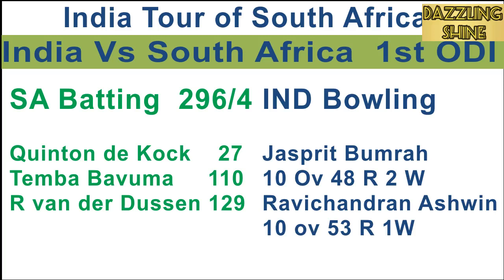Last ball of the over to Bavuma — a tossed-up ball and Bavuma comes out and drives it through the cover nicely for four. Fourth ball of the eighteenth over, Ashwin to Mukherram — a tossed-up ball on the stumps, Mukherram pushes it towards mid-off and sets off for a single; there's a direct hit and Mukherram is run out for four. Third ball of the nineteenth over, Chahal to Van Der Dusan — Dusan reverse sweeps it nicely and there has been a fumble by the fielder; that's gone to the boundary for four.